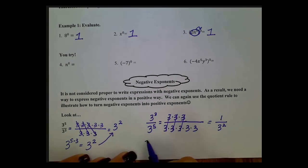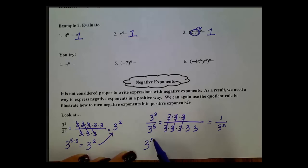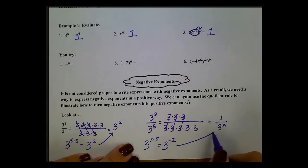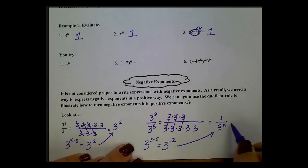Now what if we flip this around — 3 to the 3rd divided by 3 to the 5th? Expanding this out, anything divided by itself makes 1, so we get 1 times 1 times 1, and 3 squared ends up in the denominator. Using the quotient rule: 3 minus 5 gives us 3 to the negative 2nd power. So a negative exponent means it ends up in the denominator — 3 to the negative 2 power is 1 over 3 squared, which equals 1 ninth.